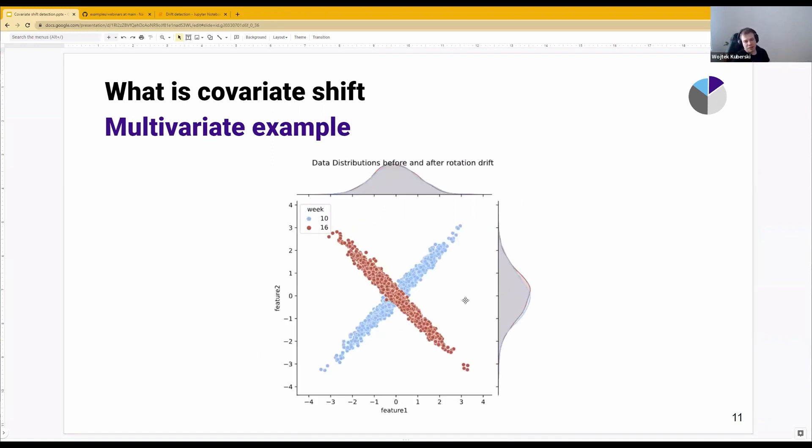Now, as I mentioned, we're talking about a joint probability distribution. Just to give you an example why this joint part is important, there are kinds of covariate shifts when, if you look at every single feature separately, you will not really see a difference. Imagine here, due to some kind of error on the data preparation or data engineering side, or maybe somewhere in your data pipelines upstream, feature one and feature two get switched sometime between week 10 and week 16.